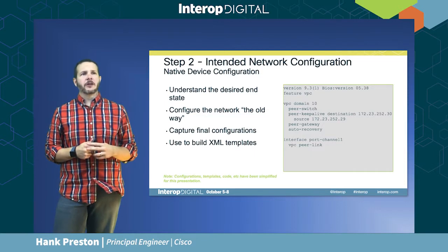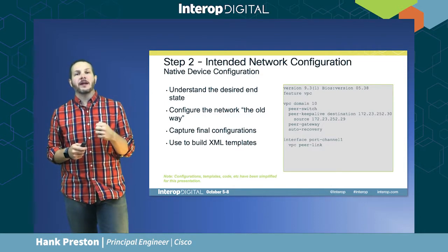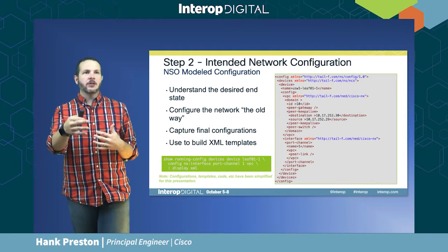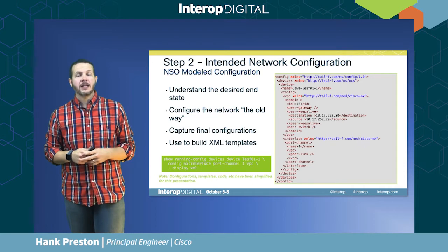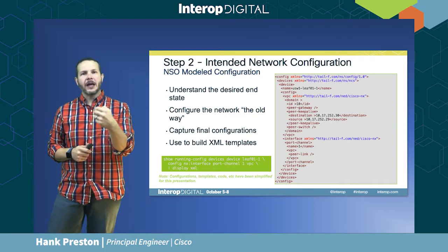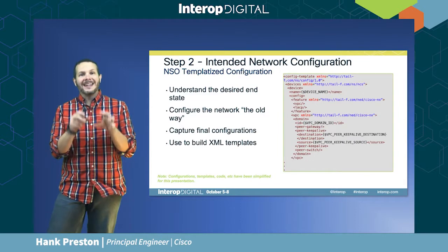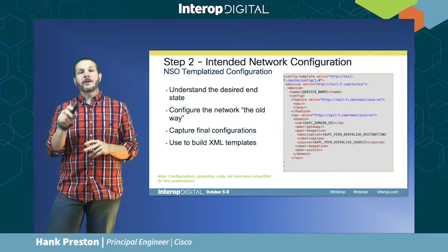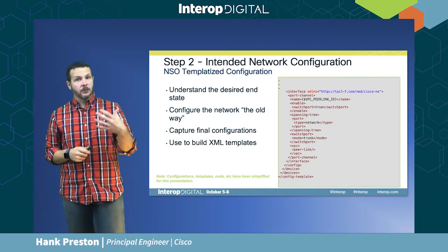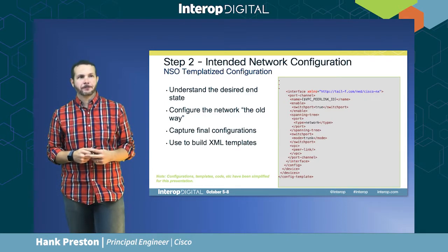Cisco NSO provides a handy feature here: it can take this native configuration and convert it directly into an XML-modeled topology. In this example, we see the same configuration from the previous slide but written in XML. With that XML, we can start putting in variables for the elements of the configuration that will change based on the fabric or tenant — a variable for the device name, a variable for the vPC domain ID, and keep-alive addresses. This gets flushed out into a full configuration template.